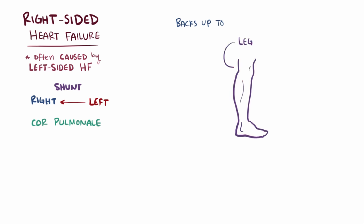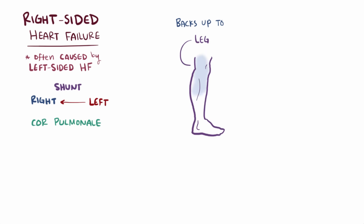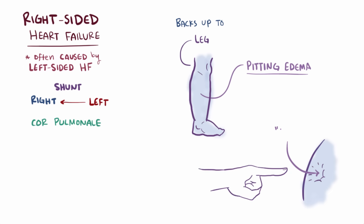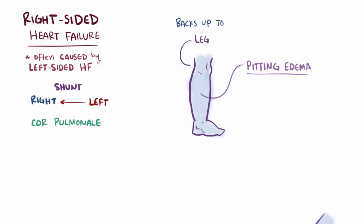Fluid backing up into the interstitial space of the soft tissue of the legs causes pitting edema, where the tissue is visibly swollen and when you apply pressure to it, it leaves a pit that takes a while to return to its original shape. This generally affects the legs in most people because gravity causes fluid to pool in the dependent parts of the body — the legs when standing, and the sacrum, essentially the lower back, when lying down.